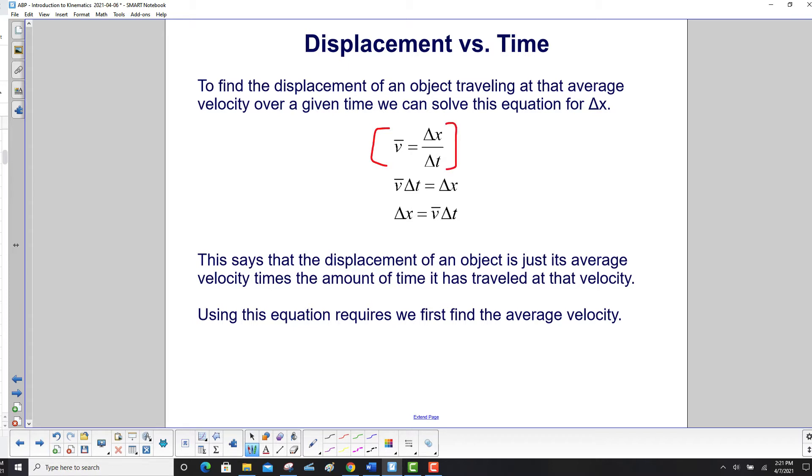Multiply through by Δt on both sides, and that's what we have here. We have v̄Δt equals Δx, and then just switch that around. So we have Δx is average velocity times Δt. In words, the displacement of an object is just its average velocity times the amount of time it is traveled at that velocity.